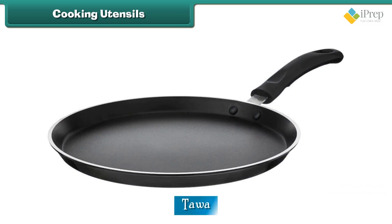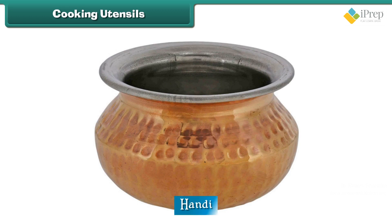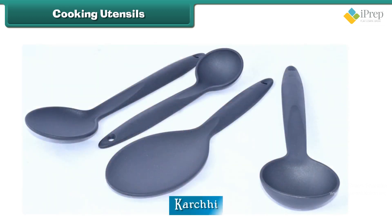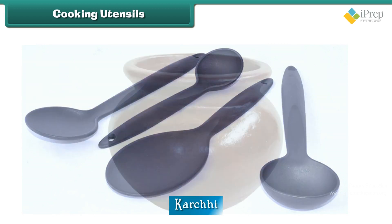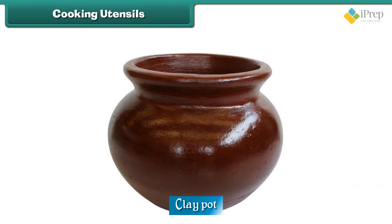The tawa is used to cook chapati and parathas. The handi is used to cook rice and biryanis. The karchi or spoon is used for stirring and serving food items. The clay pot is used to store water and grains in villages.